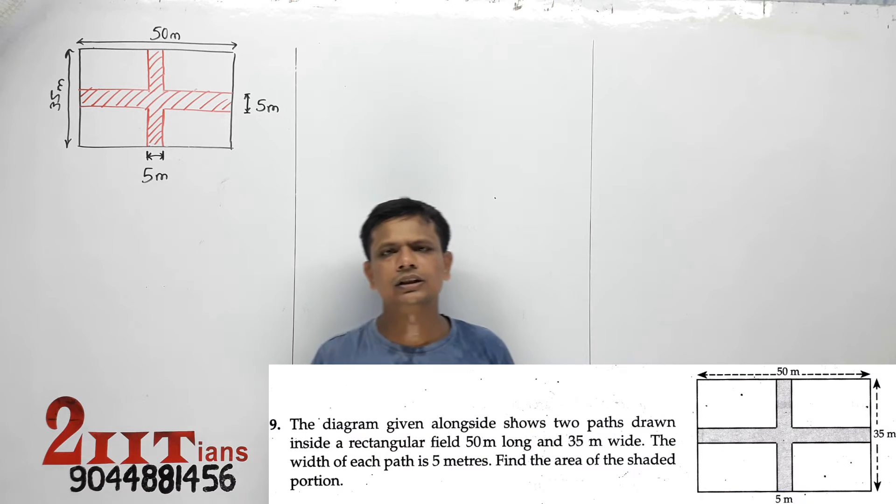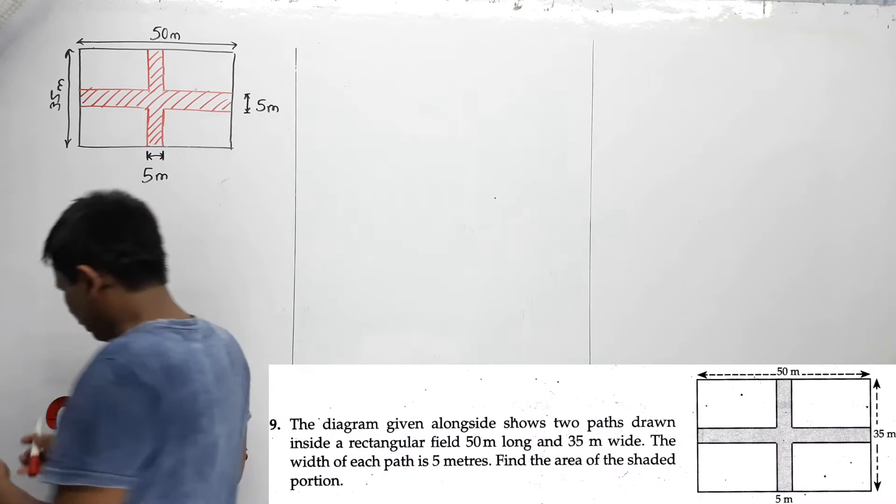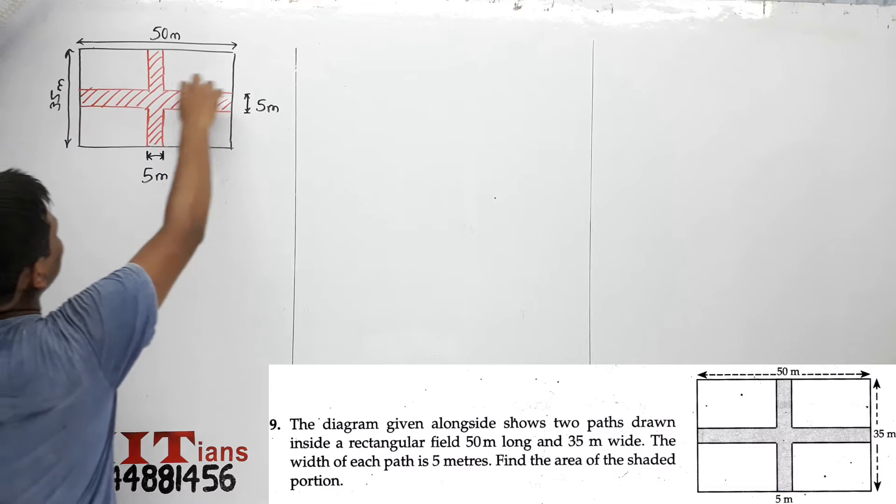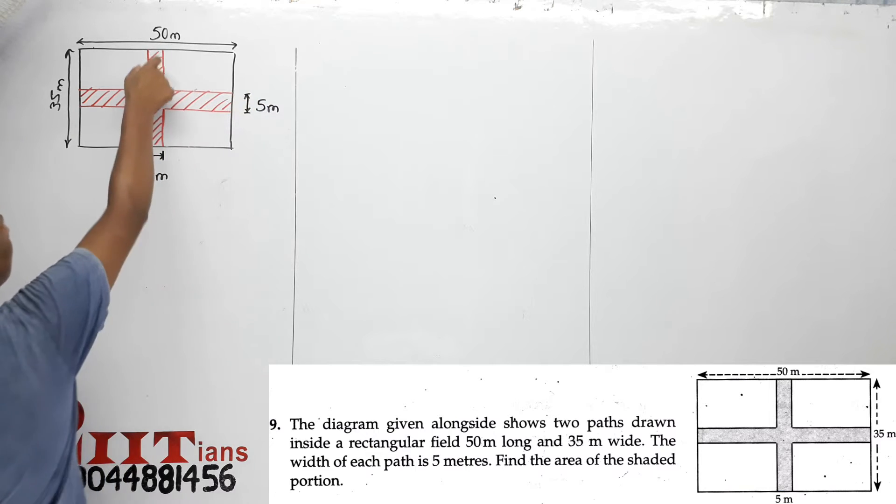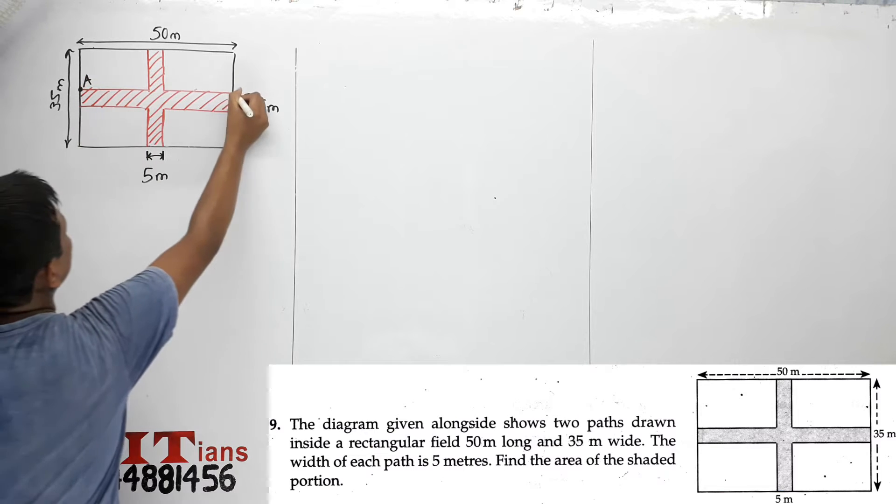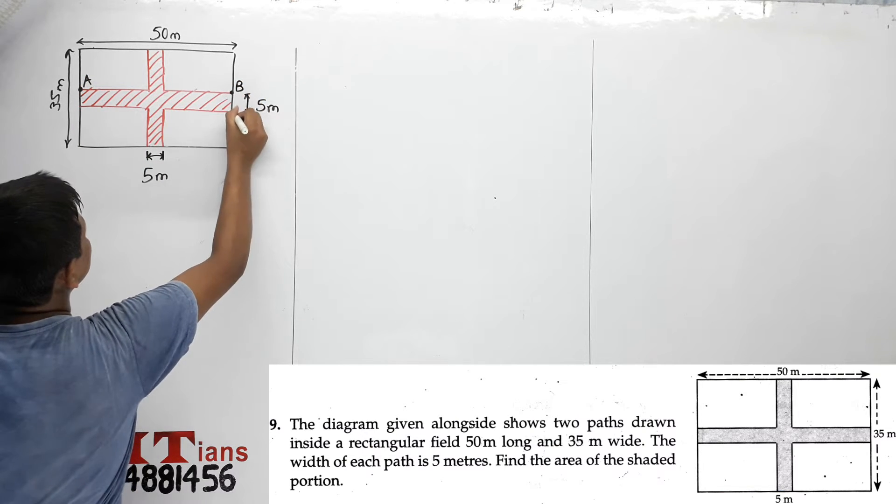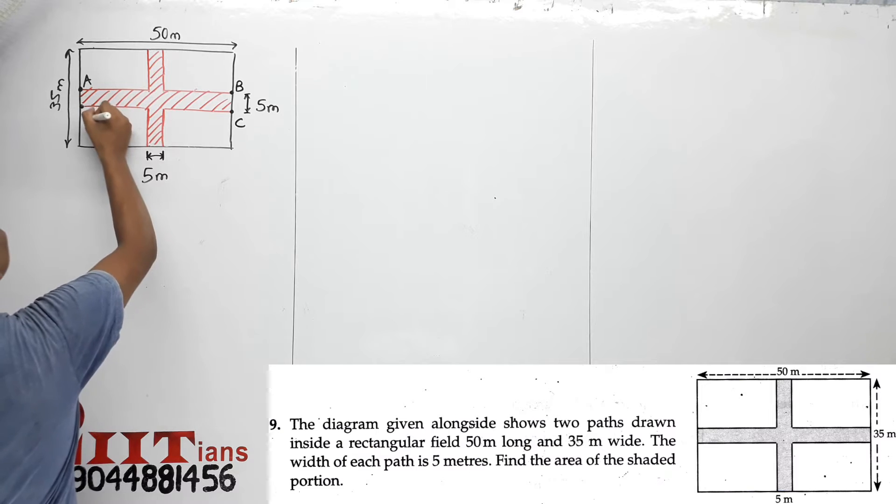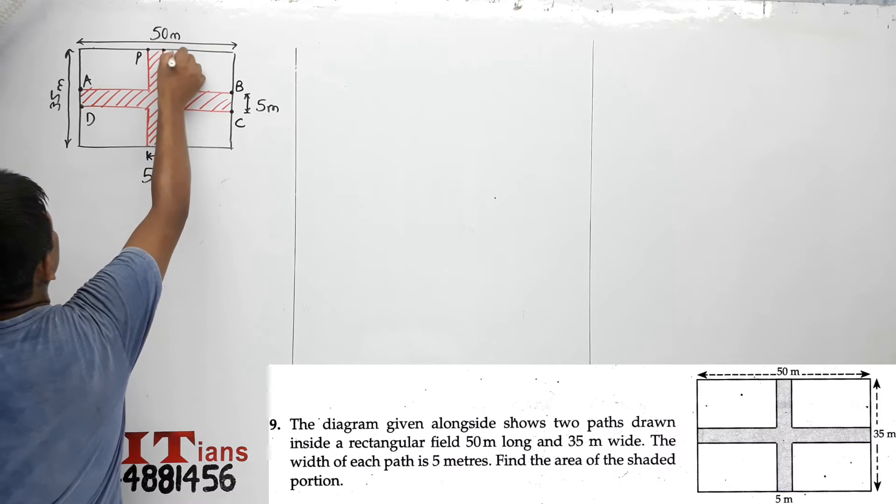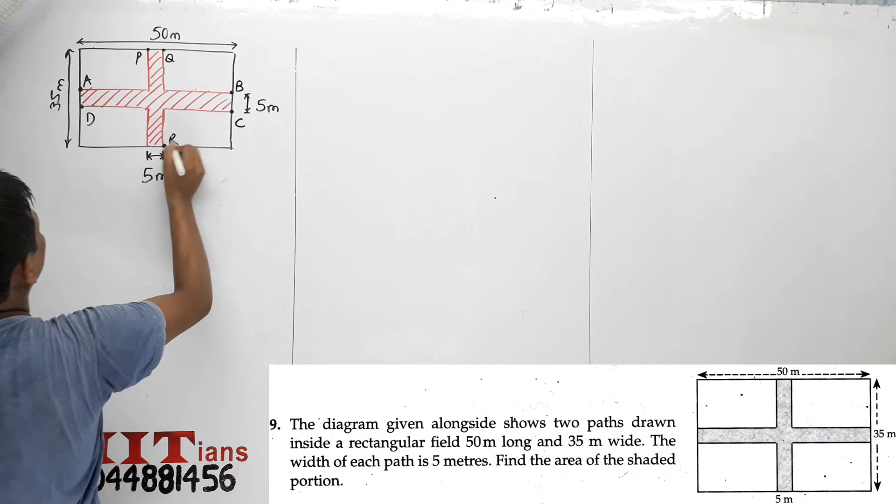The red part is the shaded portion. Now, here we have a rectangle, and this is a rectangle. We label them A, B, C, D and this is named P, Q, R, S.